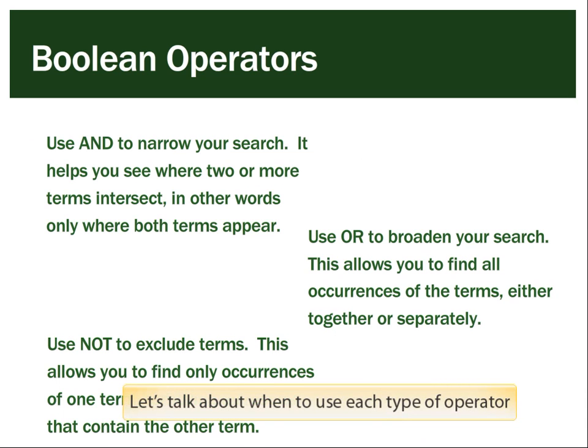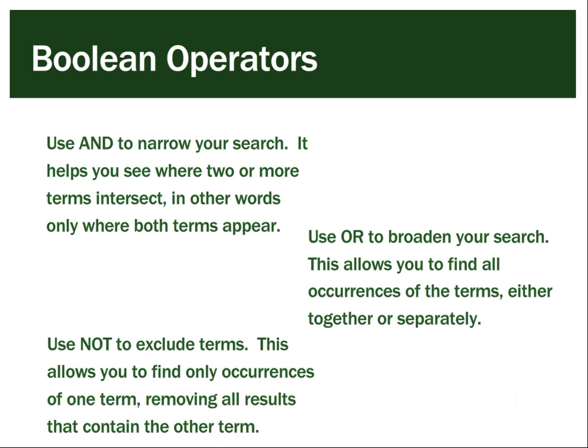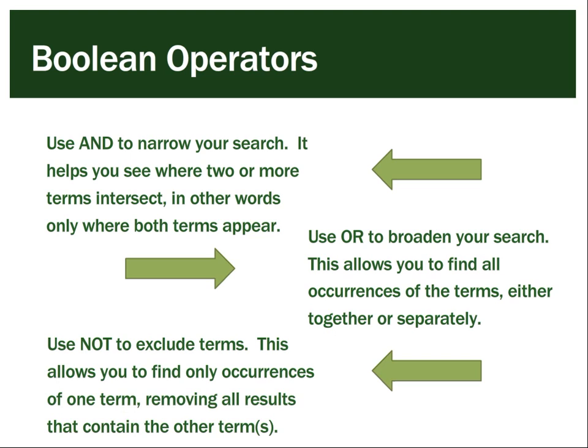Let's talk about when to use each type of operator. Use AND to narrow your search — it helps you to see where two or more terms intersect, meaning only where both terms appear. Use OR to broaden your search, allowing you to find all occurrences of the terms, either together or separately. Use NOT to exclude terms, finding only occurrences of one term while removing all results that contain the other terms.